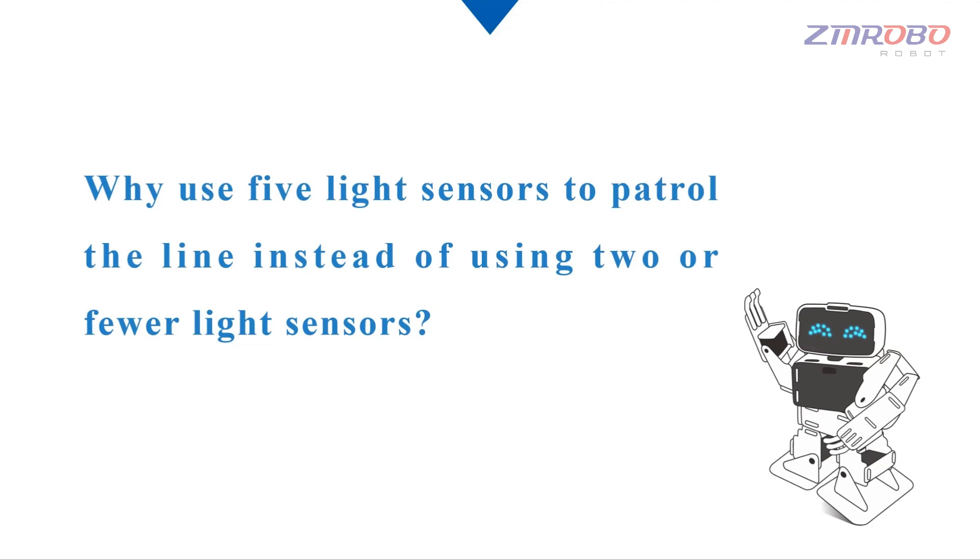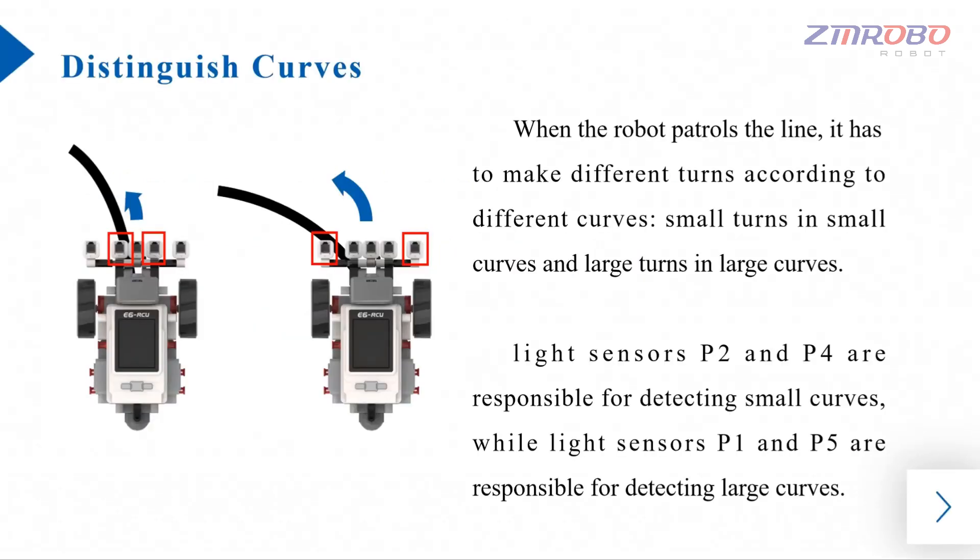At this point, many of you may be wondering why 5 photoelectric sensors are used for Line Patrol instead of 2 or fewer photoelectric sensors. Because if we want the robot to be more stable when patrolling the line, we need the robot to be able to make different magnitude of turning movements according to different curves.